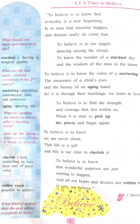Stanza four: 'To believe is to find the strength and courage that lies within us when it is time to pick up the pieces and begin again.' The poet wants to tell us that through self-belief we learn the strength and courage that always lies within us. Courage and strength means to be strong, to have high spirit, and we need that strength and courage to pick up the pieces and begin again — meaning to return to normal life after any shock or disaster.